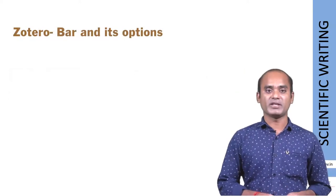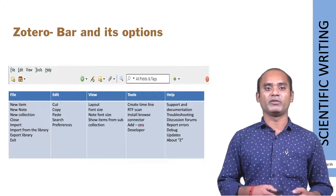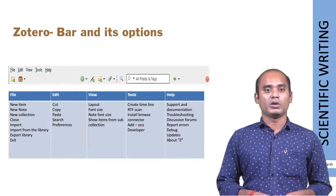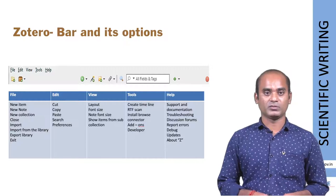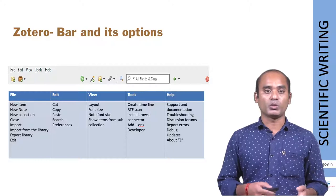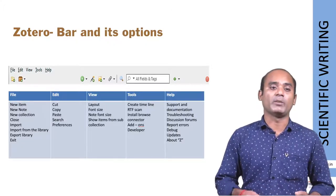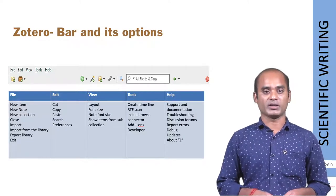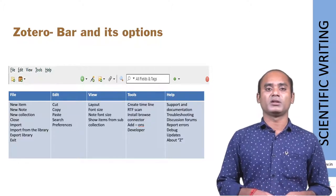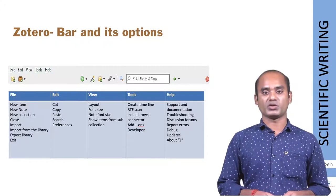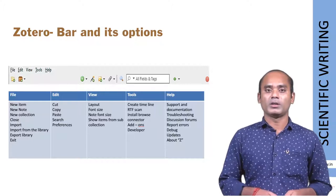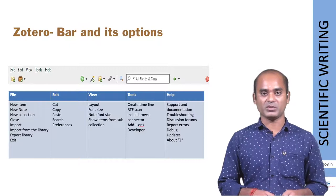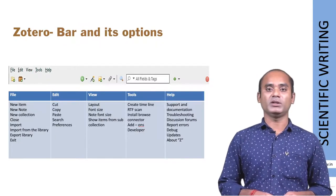In these slides we will see basic functions available in Zotero — File, Edit, View, and Tools. Under File, you can add a new item such as articles or books, write small notes about articles, create a new folder by clicking New Collection, import data from other sources, and export the library. Basic functions like cut, copy, paste, search, and preferences can be done using Edit. You can change layouts and font size using View, and install browser connectors and add-ons under Tools. Zotero also has a discussion forum where you can discuss queries with others.